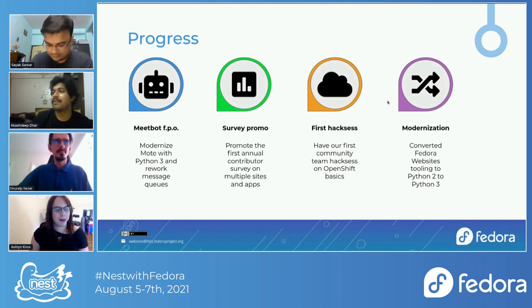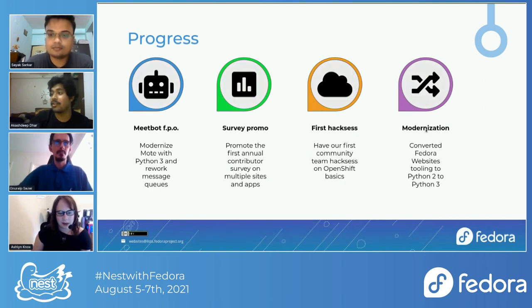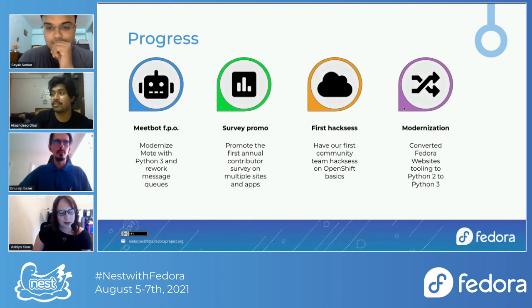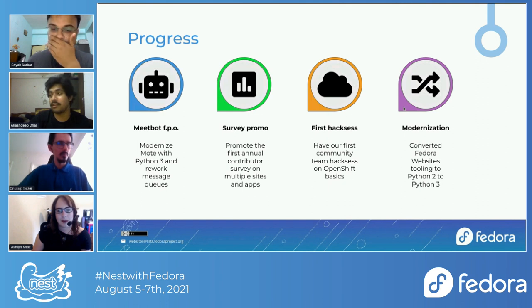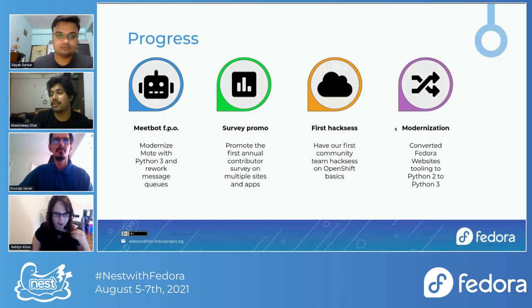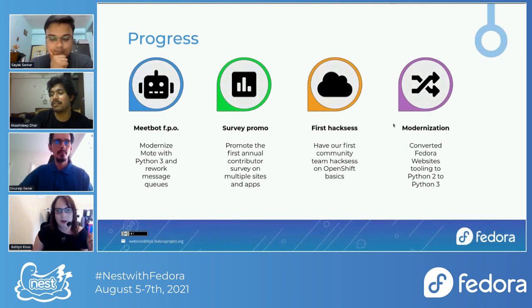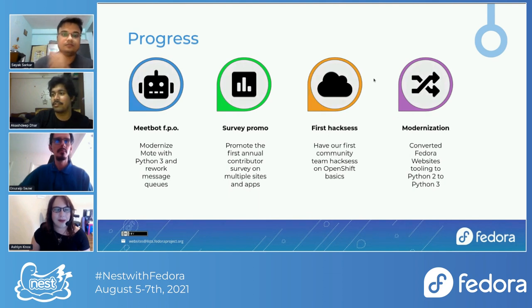Talking about the modernization of Fedora websites tooling, we converted the tooling from Python 2 to Python 3, along with version bumping of all the dependencies that the websites use for rendering to the most recent version. It's still a pull request being merged, but it should be done in a couple more weeks. Let's talk about the websites that we work on.